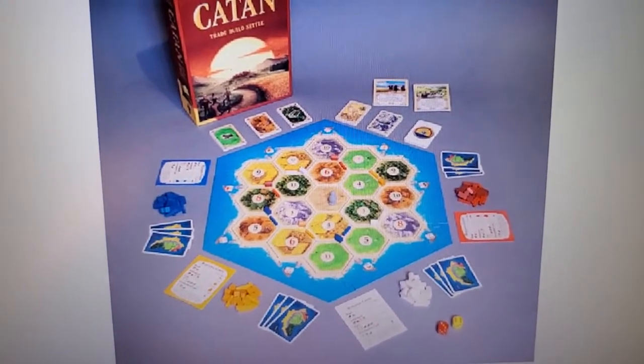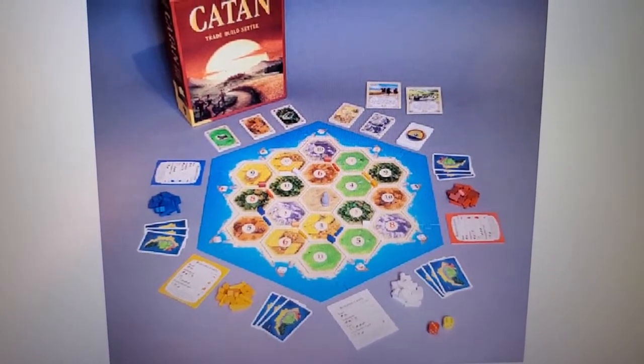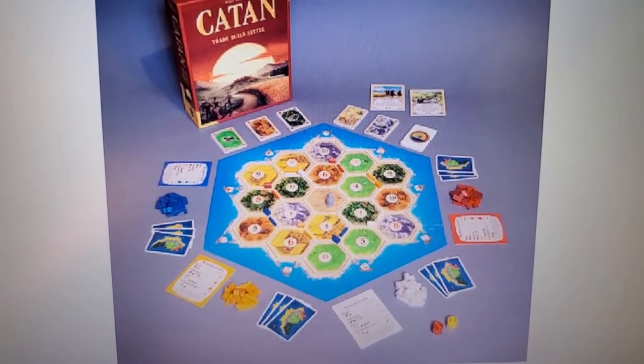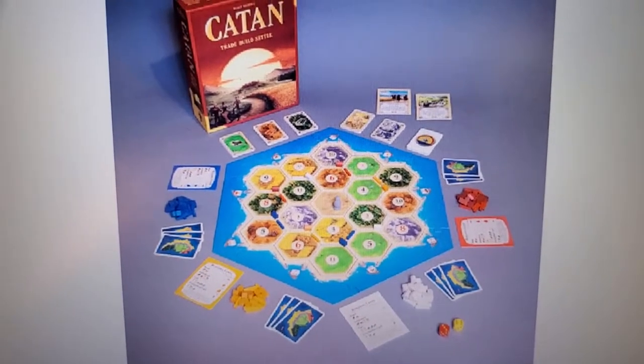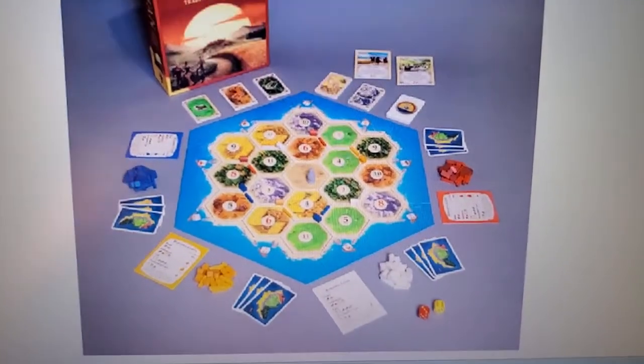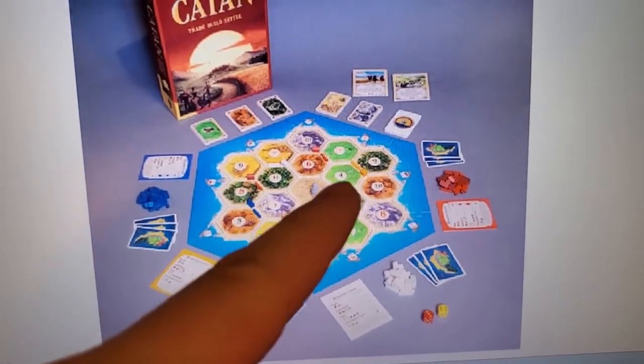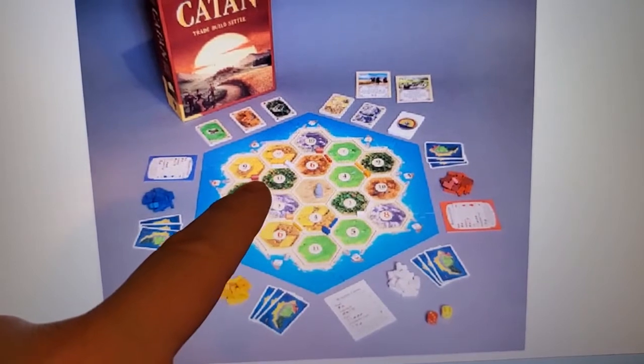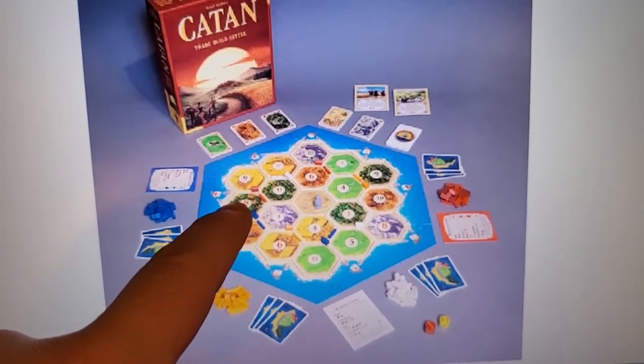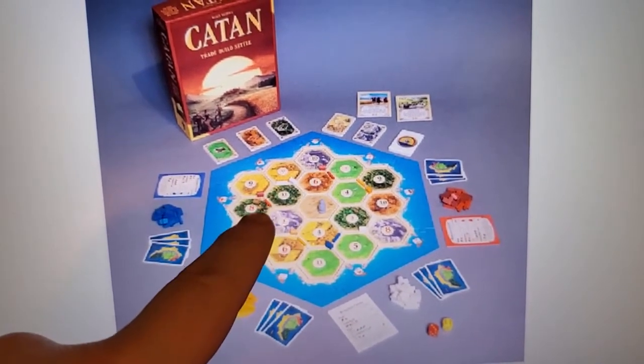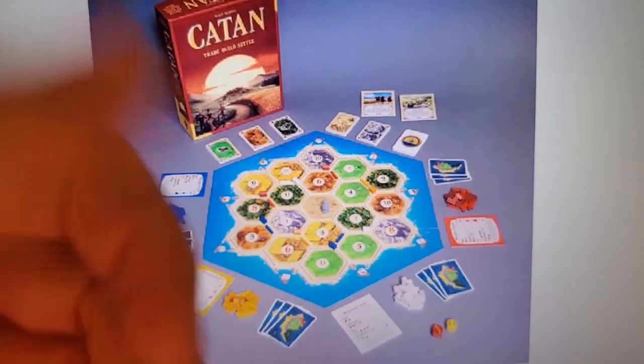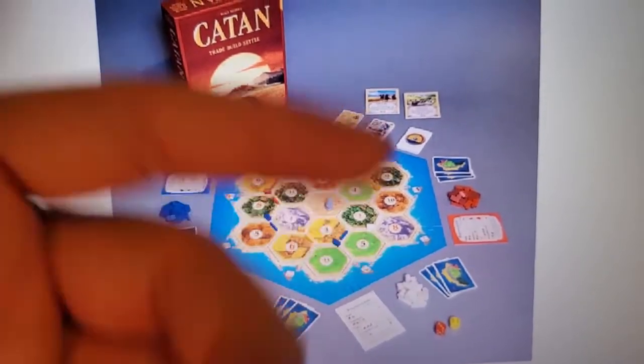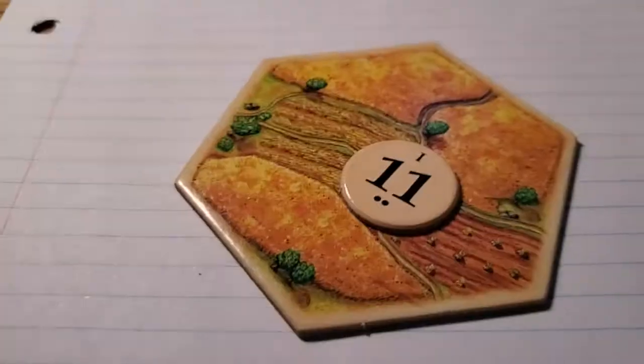Those points can be from buying different things, having a long road, or the biggest army, those sorts of things. On the map, there's a bunch of different hexagons, and if you build beside a hexagon, the different colored resources around it enable you to get these cards that you then can buy the things that can give you victory points.